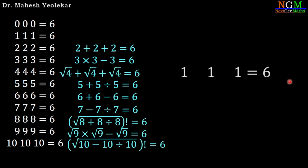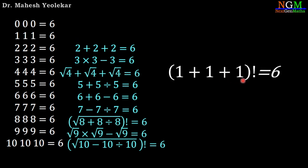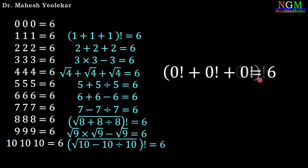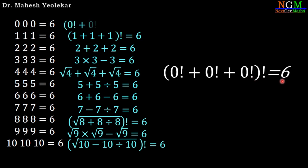For 1, 1, 1 equals 6: 1 plus 1 plus 1 equals 3, and 3 factorial equals 6. And the last equation: 0, 0, 0 equals 6. Apply factorial and addition: 0 factorial plus 0 factorial plus 0 factorial, meaning 1 plus 1 plus 1 equals 3, and 3 factorial equals 6.